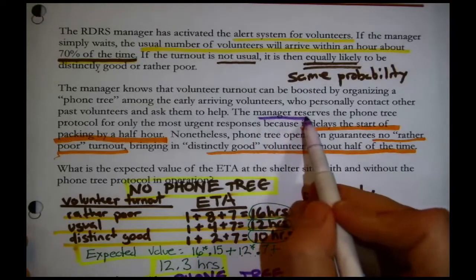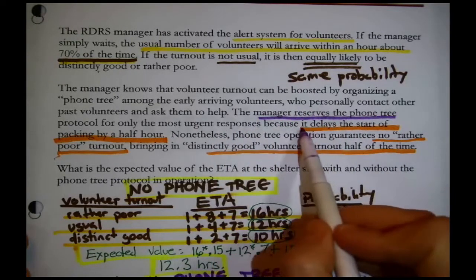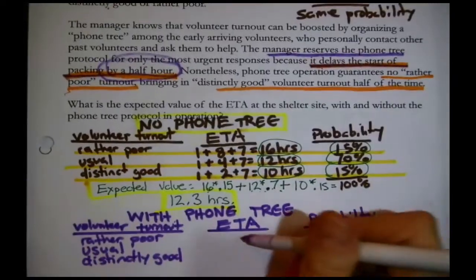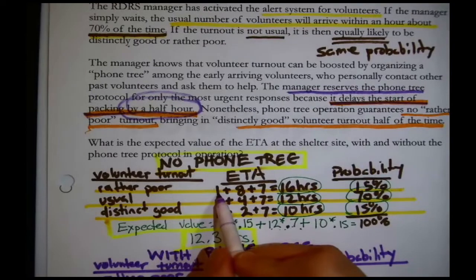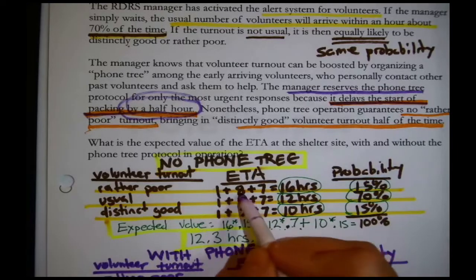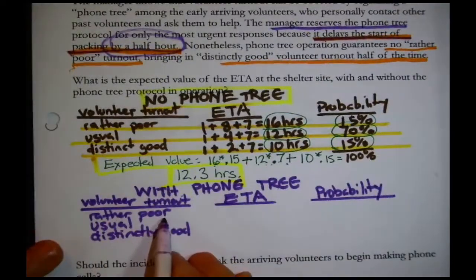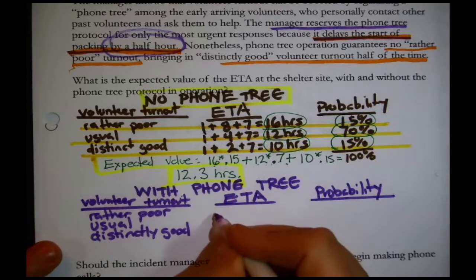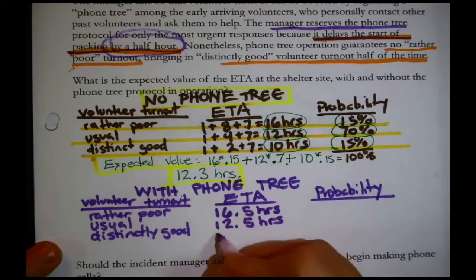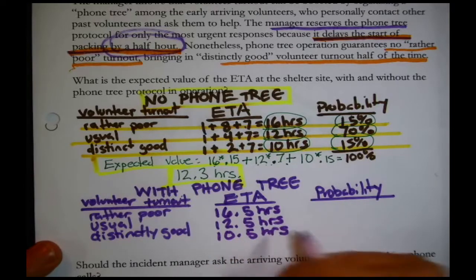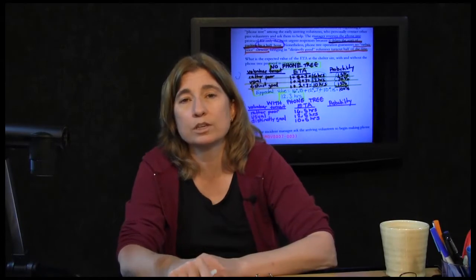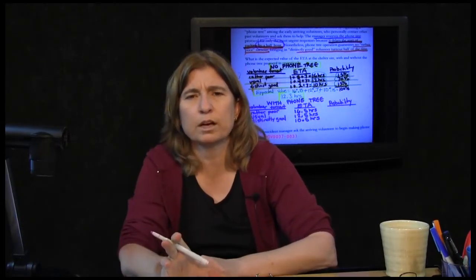Why does the manager hesitate to use the phone tree? Because it delays the start of packing by a half hour. Normally they wait one hour before packing, but with the phone tree they'd wait one and a half hours. Everything else stays the same, so the ETAs each increase by 0.5 hours: rather poor becomes 16.5 hours, usual becomes 12.5 hours, and distinctly good becomes 10.5 hours.